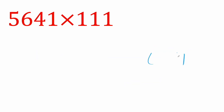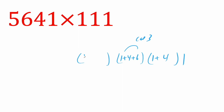Okay, this is our last problem, same procedure. We take our one, do our parentheses: one plus four. And we go again: one plus four plus six. Again, we cap at three — that's important. Then our next one, we don't say one plus four plus six plus five; we say four plus six plus five. And then we go again: six plus five, and then our final one, which is just five.